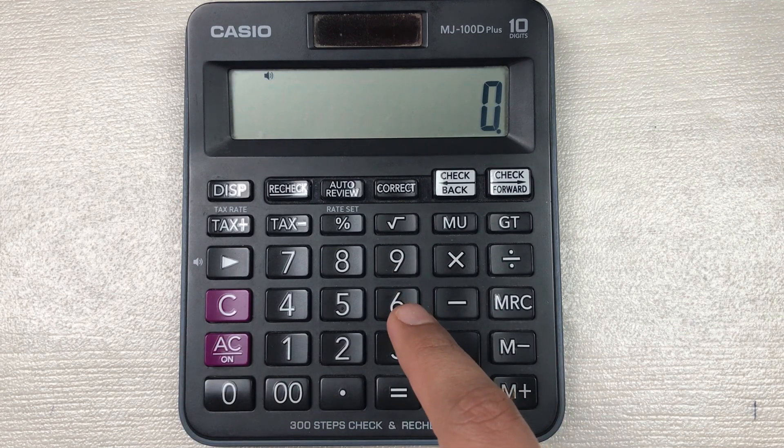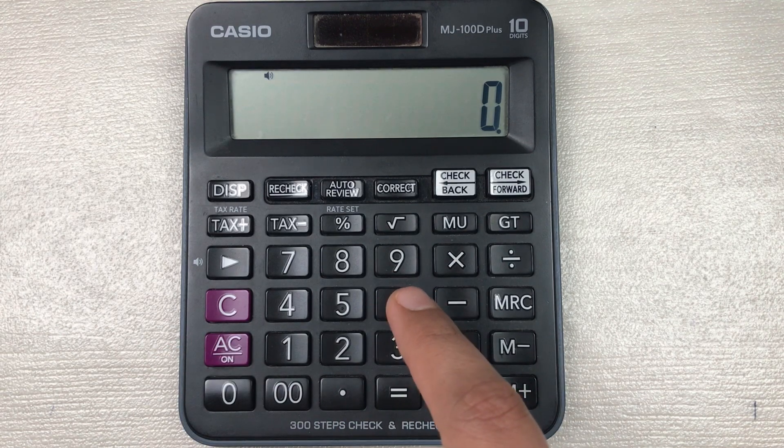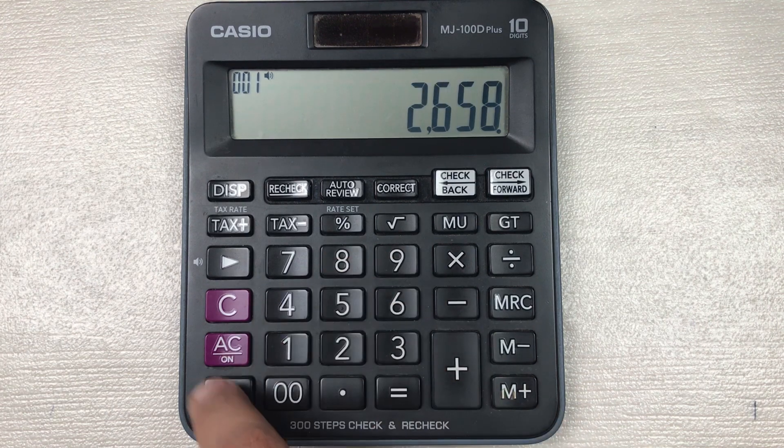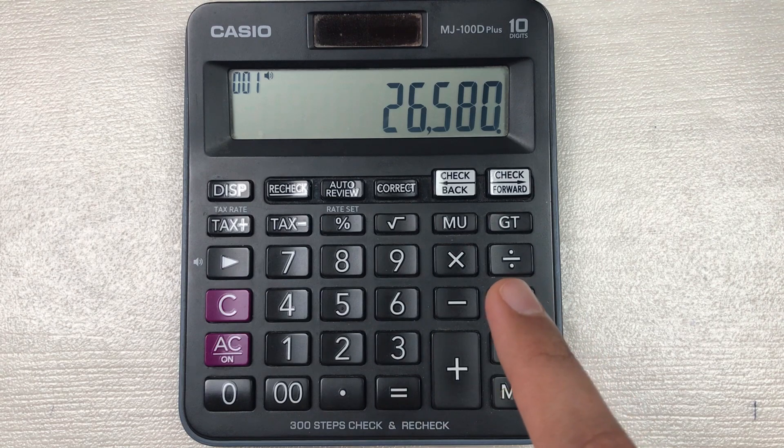Let's move to another example. Let's say we have an item and the price of that item is 26580, and you want to find out what will be the final price after 90% off.